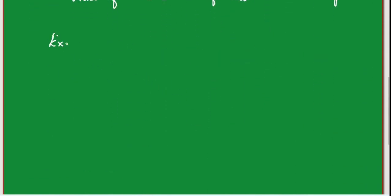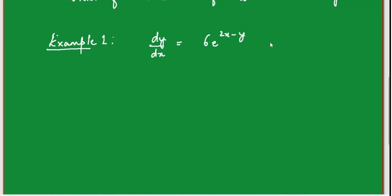Let's take the first example: dy/dx = 6e^(2x−y). We are asked to find the general solution. You can see that the right-hand side, compared with f(x,y), splits into 6e^(2x) times e^(−y) — a function of x times a function of y. So the right-hand side is in separable format; you can separate it into a pure function of x times a pure function of y.